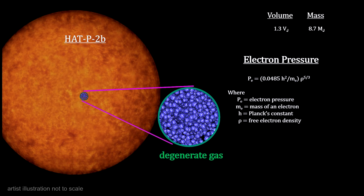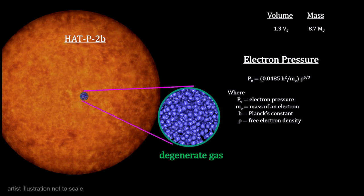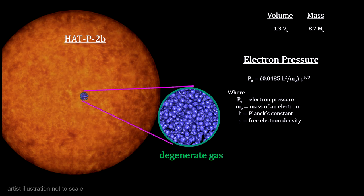Based on this principle, an outward pressure is created that prevents a total collapse. It's called electron pressure.